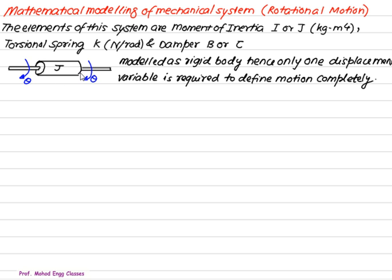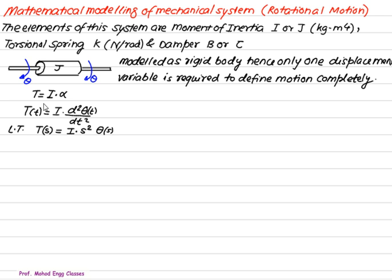So only one displacement is required to define the motion completely. That is why we have shown theta on both sides. Whenever you see J, replace both sides by the same displacement variable theta. We know that torque equals I multiplied by alpha, where I is the moment of inertia and alpha is the angular acceleration. Both torque and alpha are dependent on time, while I is a geometry property that remains constant. So T(t) = I · d²θ/dt².